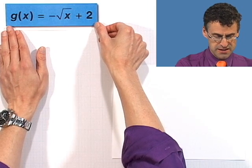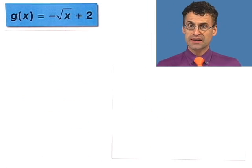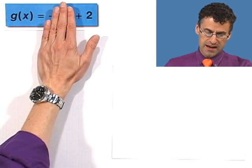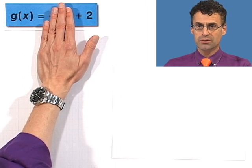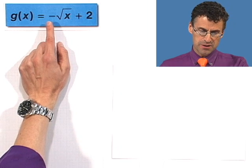So let's consider the function g(x) equals negative the square root of x plus 2. Now we know what the plus 2 does, right? That takes whatever we had here, and we just raise it 2. So that's a translation up 2. But it's this negative sign that I want us to think about right now, because that's an example of a reflection.